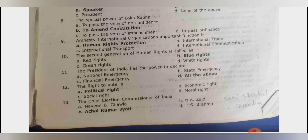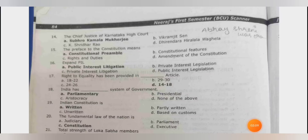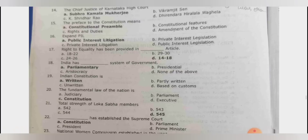The right to vote is our political right. The chief election commissioner of India — a repeated question — the current commissioner is Shri Sushil Chandra. The chief justice of Karnataka High Court is Abhay Srinivas Oka. The preamble to the constitution means the constitution's introduction — it is the preface or introduction.